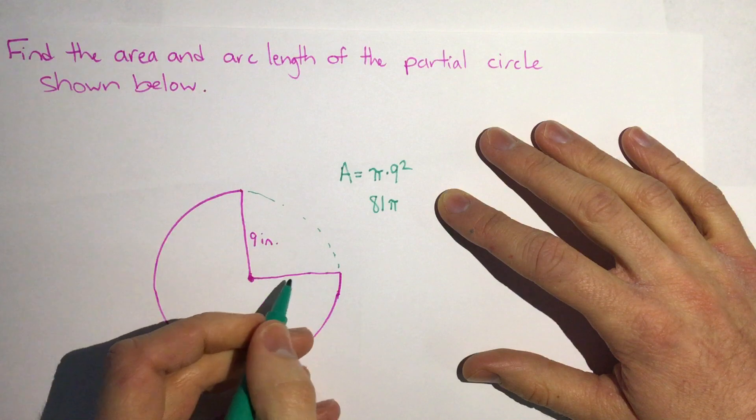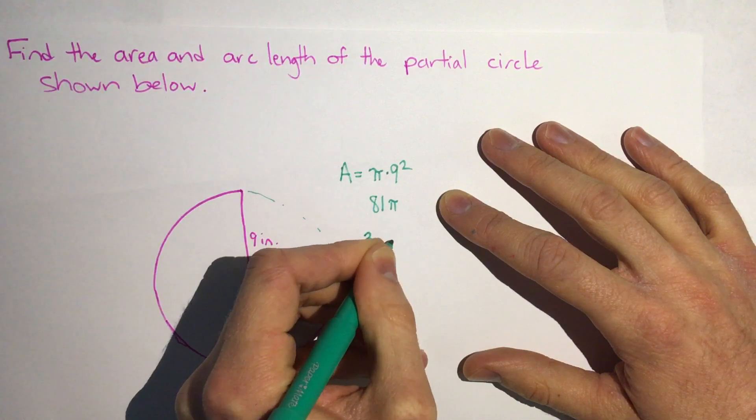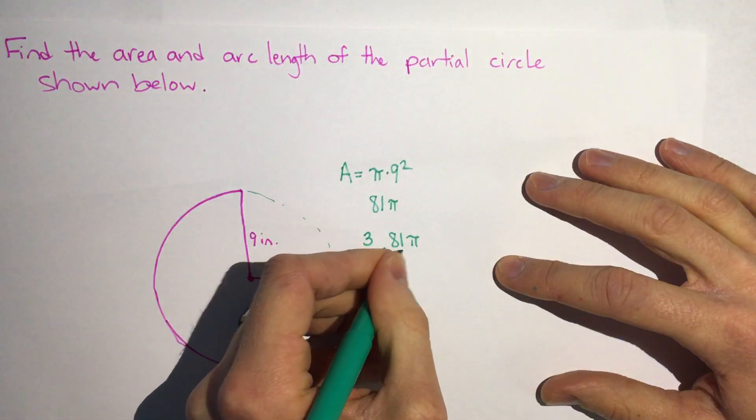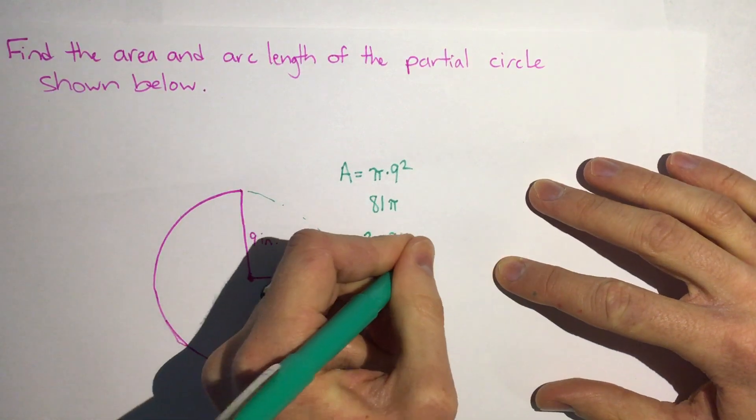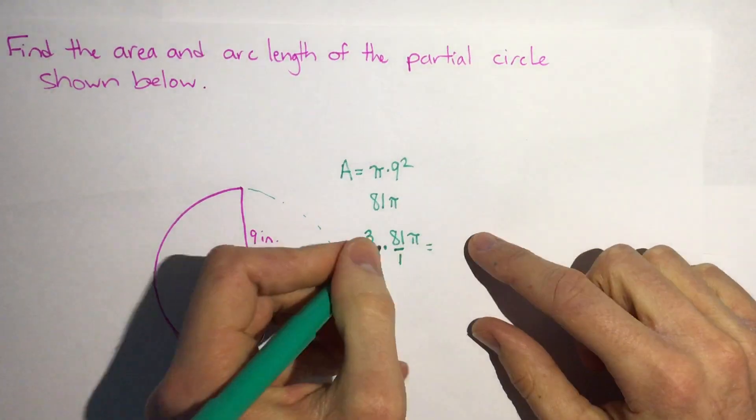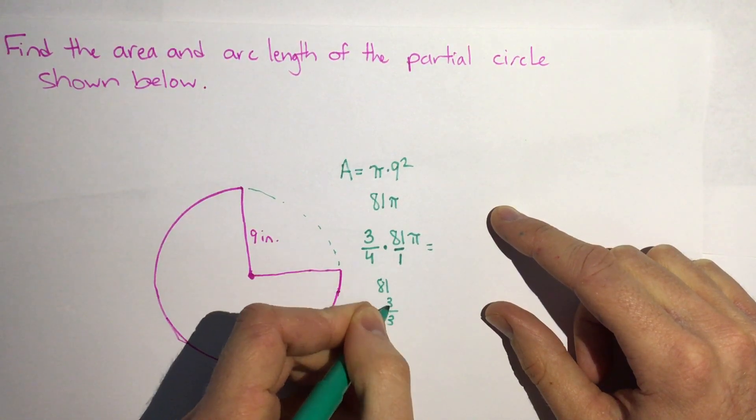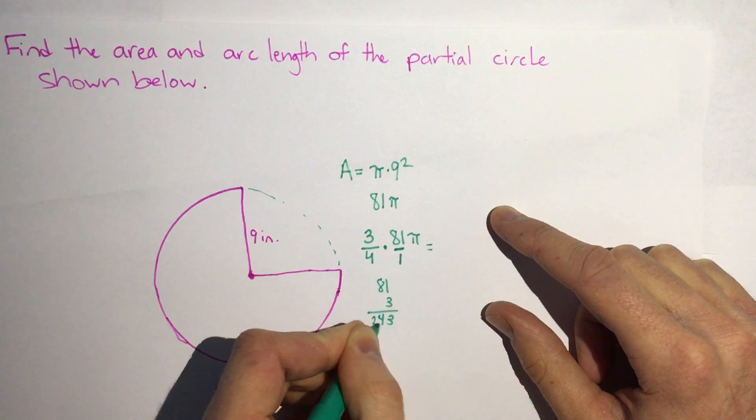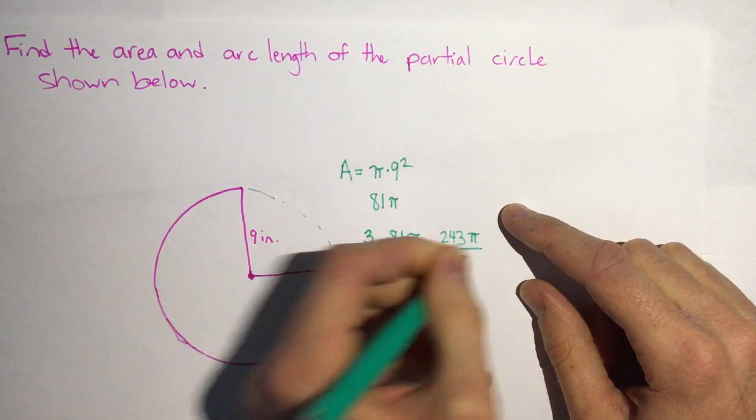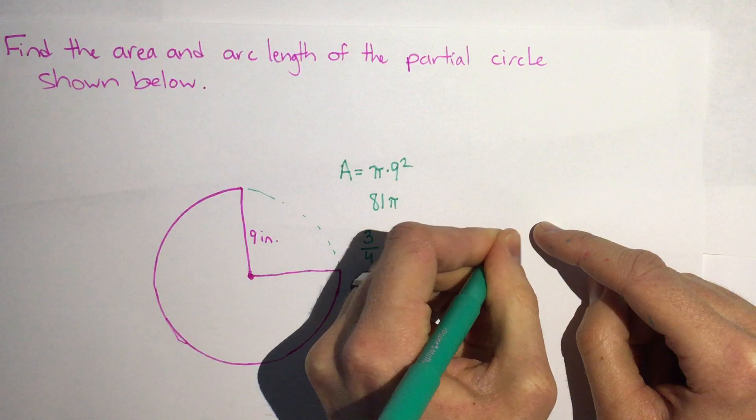Then if we find this, this is 3 quarters of a circle so we're gonna do 3 fourths times 81 pi. So 3 fourths times 81, we can put that over 1. 3 fourths times 81, 81 and 4 don't really simplify so we have to go with 3 times 81. 81 times 3 is 3, 1 times 3 is 3, 8 times 3 is 24. 243 pi divided by 4. So our area is 243 pi over 4 inches squared.